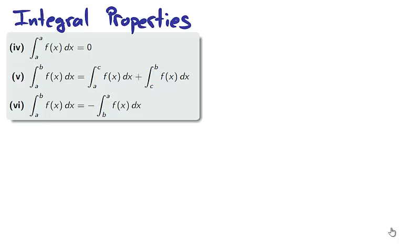We have three additional integral properties. For the fourth property, if the interval of integration has zero width, that is, a is equal to b, or we're integrating between a and a, the base of every rectangle in the Riemann sum is zero. Therefore, the total area is zero. So the integral from a to a is always zero.